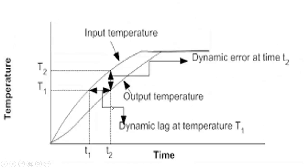To understand dynamic error and dynamic time lag, consider a graph where the input temperature signal changes over time — for example, 10°C at 5 minutes, 20°C at 10 minutes, 40°C at 30 minutes, 50°C at 40 minutes. The instrument output temperature responds differently, with a visible shift from the input signal.